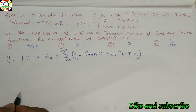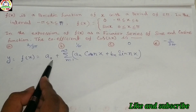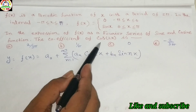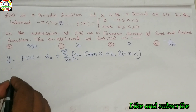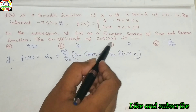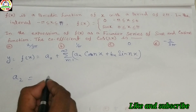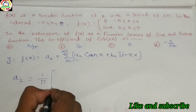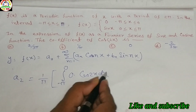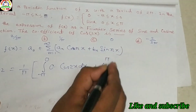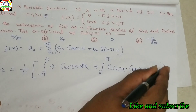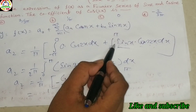We know y = f(x) = a₀ + Σ(n=1 to ∞) [aₙ cos(nx) + bₙ sin(nx)]. The coefficient of cos(2x) means we need n = 2, so we calculate a₂. a₂ = (1/π) [ ∫₋π⁰ 0·cos(2x) dx + ∫₀π sin(x)·cos(2x) dx ]. We use the product formula 2 sin(C)cos(D) = sin(C+D) + sin(C−D).